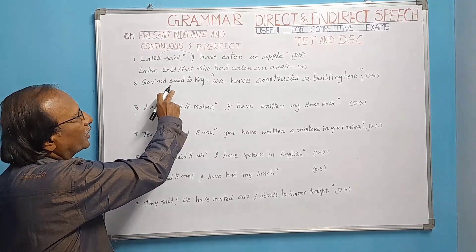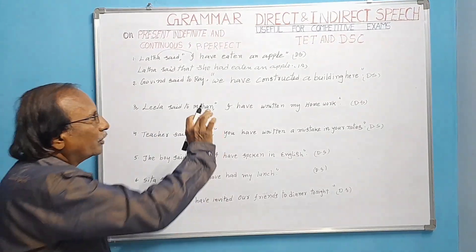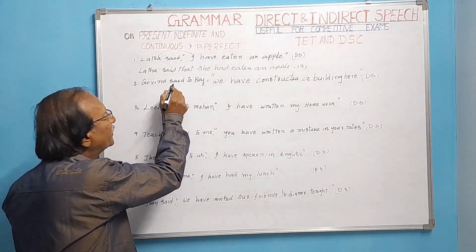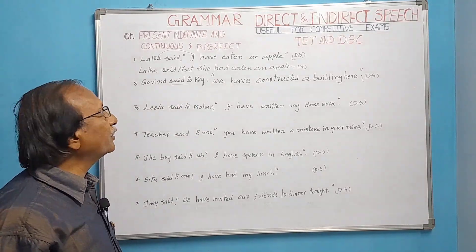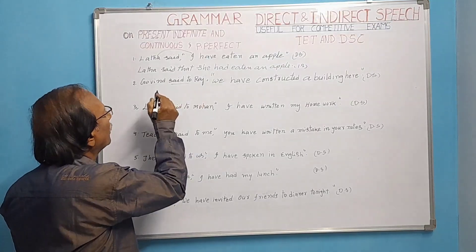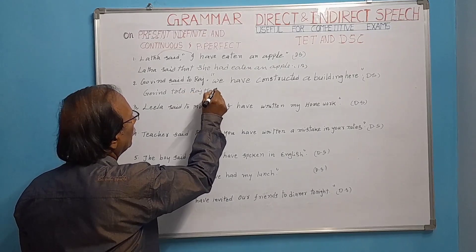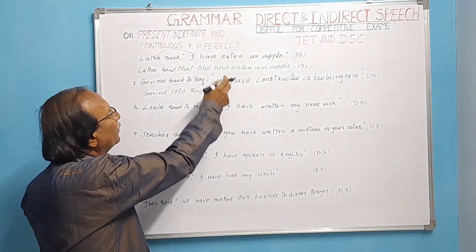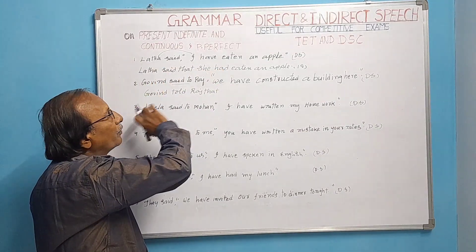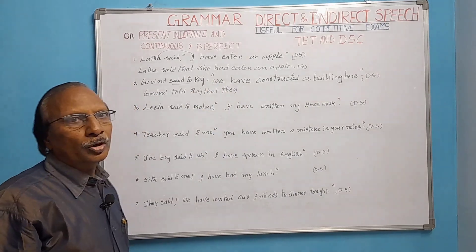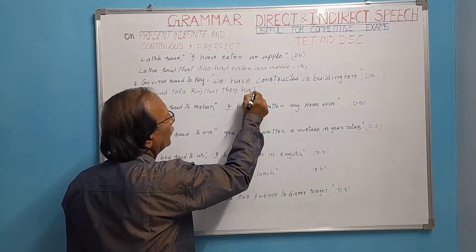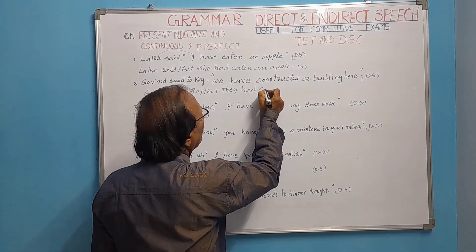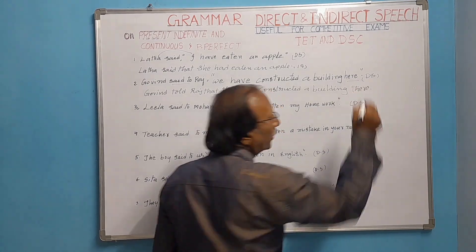Govind said to Raj, 'We have constructed a building here.' 'Said to' becomes 'told': Govind told Raj. We add 'that.' 'We' refers to Govind and his family members, so it becomes third person plural 'they.' Present perfect 'have constructed' changes to past perfect 'had constructed.' 'Here' changes to 'there.' Result: Govind told Raj that they had constructed a building there.